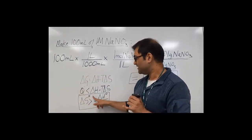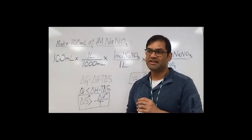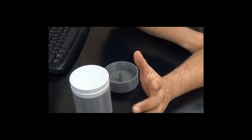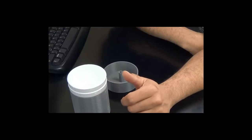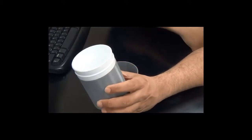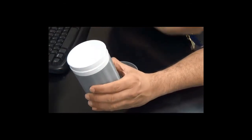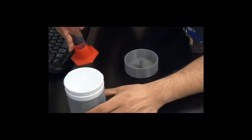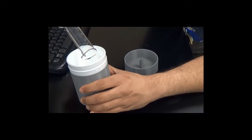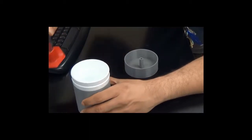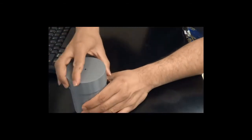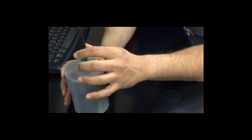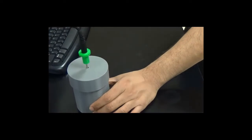We're going to do this experiment under standard state conditions at 25 degrees C. We've already weighed out our sodium nitrate — about 8.5 grams. Here's our coffee cup calorimeter with two coffee cups contained in an insulating container. We're going to add 100 mL of deionized water first, put our lid on, and insert the temperature probe, which fits nicely into the calorimeter.